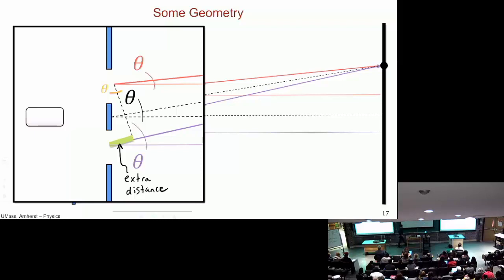If you're really good with your Euclid, you can go and prove it - that this angle, this angle, this angle, and this angle all come out to be the same angle.